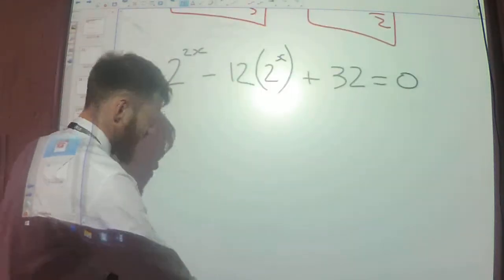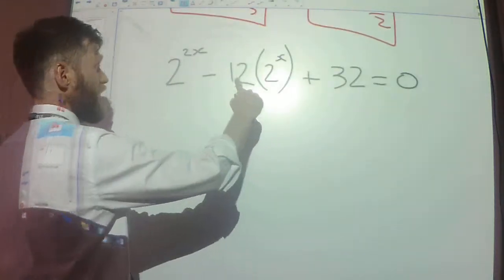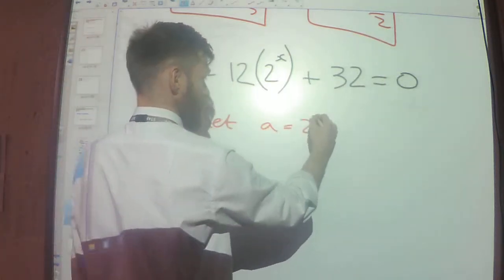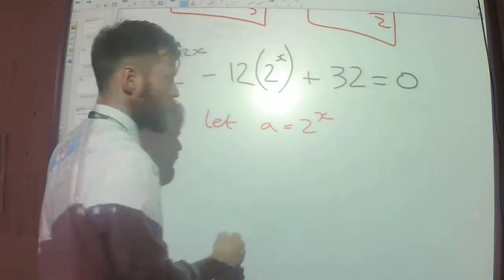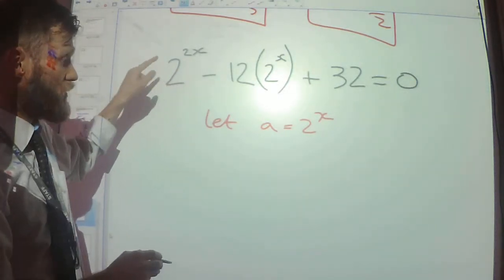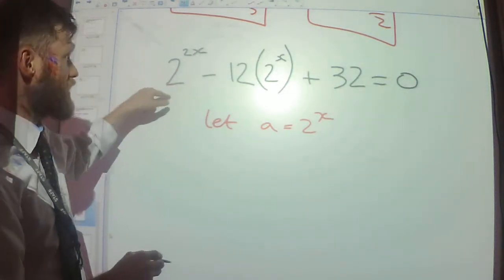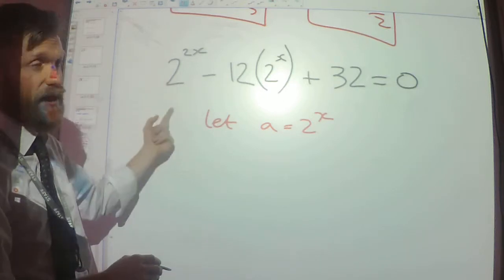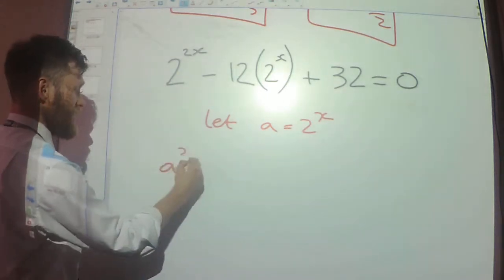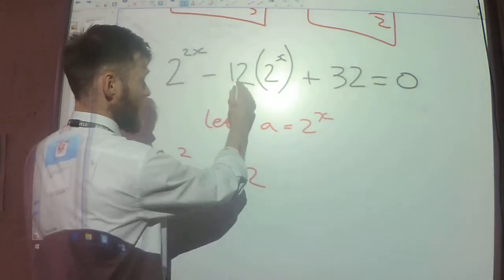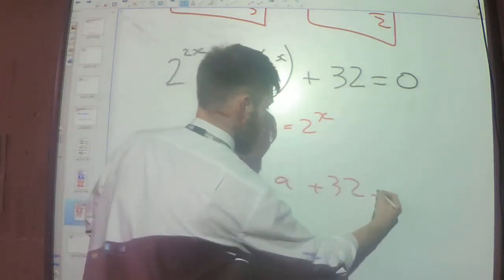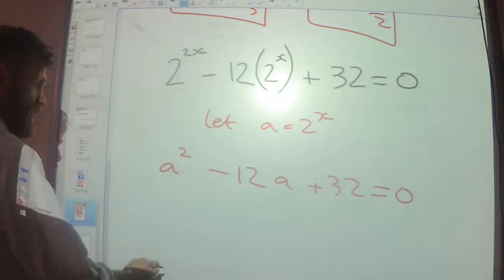Next example, same idea. Let's say let a equals 2 to the power x. So I know this is going to be a squared, because 2 to the power x times 2 to the power x is 2 to the power 2x. So I'll get a squared minus 12a plus 32 equals 0.